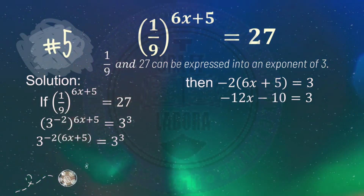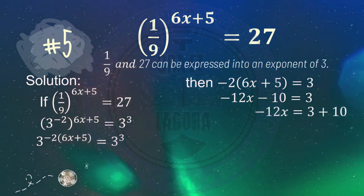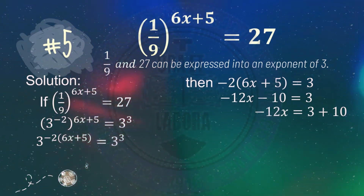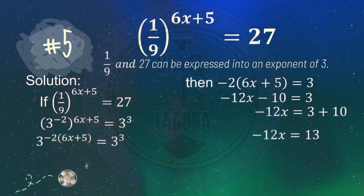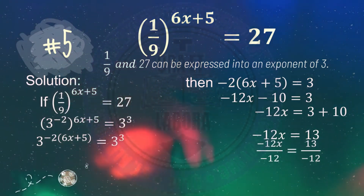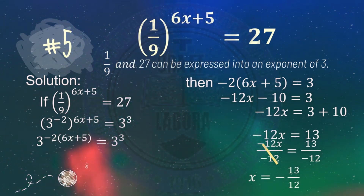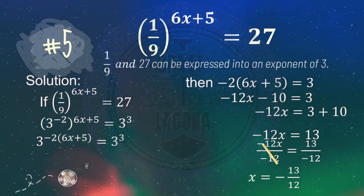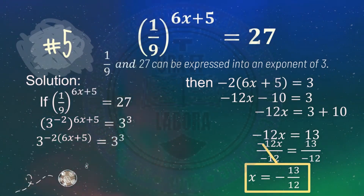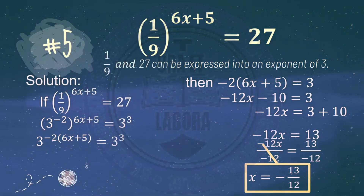Transposing negative 10 to the other side gives negative 12x equals 3 plus 10, which is 13. Since we are solving for x, not negative 12x, we divide both sides by negative 12 to cancel it out. Therefore, the value of x is negative 13 over 12.